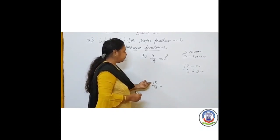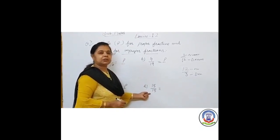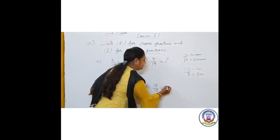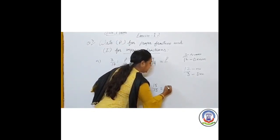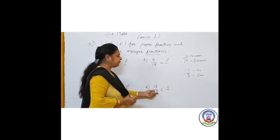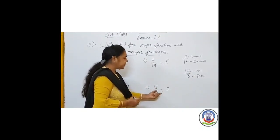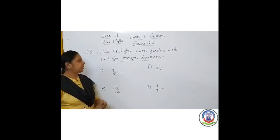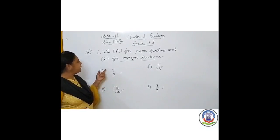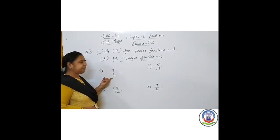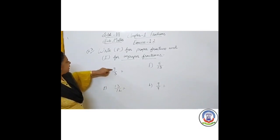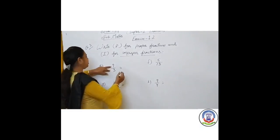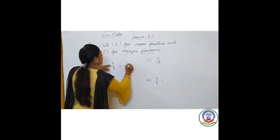Number (d): 15 upon 15 — numerator is 15 and denominator is 15. Since they are equal, this is not a proper fraction; it comes under improper fractions, so we write I. If we divide: 15 divided by 15 equals 1, which confirms it is an improper fraction. Number (e): 9 upon 3 — numerator 9 is larger and denominator 3 is smaller, so this is an improper fraction; we write I.